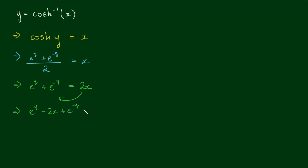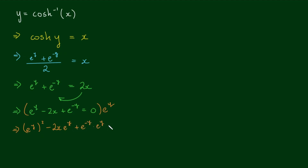Let's get 2x to the left-hand side, so that we have e to the y minus 2x plus e to the negative y is equal to 0. And now to get rid of the e to the negative y on the end, let's multiply the whole thing through by e to the y. That gives us e to the y squared minus 2x times e to the y plus 1 is equal to 0. So essentially now we have a quadratic expression in e to the y.